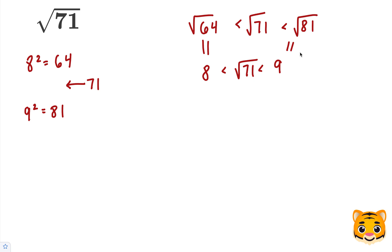Using this information, we can try out decimals between 8 and 9 that, when multiplied by themselves, give us approximately 71. Because 71 is pretty much in between 64 and 81, but a little bit closer to 64, let's try out 8.4 squared.